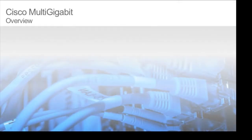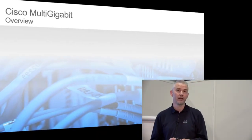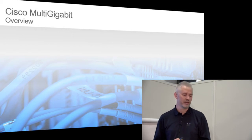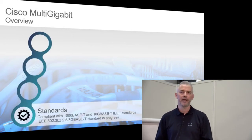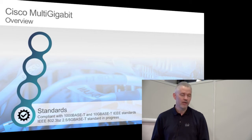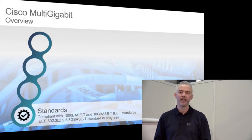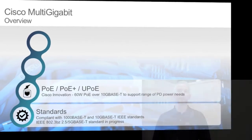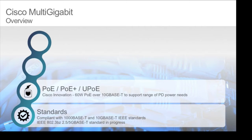Let me talk about Cisco Multi-Gigabit. We announced and introduced it in January 2015 at Cisco Live in Milan. We start off being standards compliant — with 1000 Base-T, which everyone has, and also with 10G Base-T, the IEEE specs. We have an active IEEE project, 802.3bz, standardizing 2.5 and 5G Base-T. For Cisco Multi-Gigabit, we start off wanting to give you PoE: 15 watts, PoE+ for 30 watts, and UPoE for 60. We're the first to have this out, so you can still deliver both data and power over one cable.